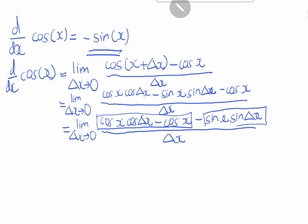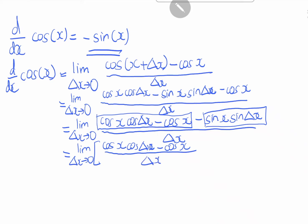So let's split into two components. We split into two fractions, and hence we can further simplify as: the limit as delta x goes to 0 of [cosine x · cosine(delta x) minus cosine x] over delta x, minus sine x · sine(delta x) over delta x.